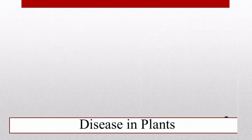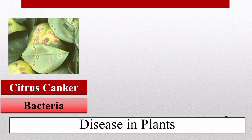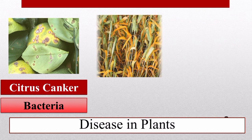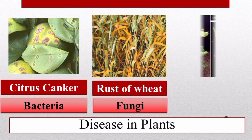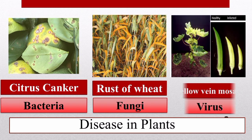Similarly, plants are also affected by microorganisms. Citrus canker is caused by bacteria, rust of wheat by fungi, and yellow vein mosaic in lady's finger by a virus — these are examples of microbial infections in plants.